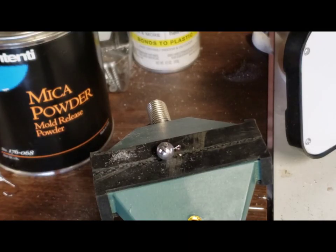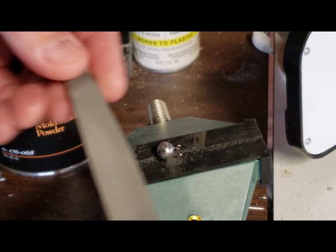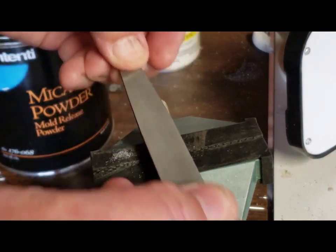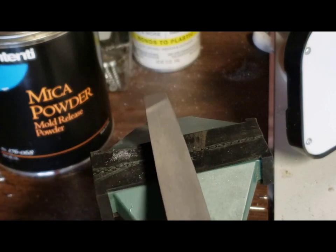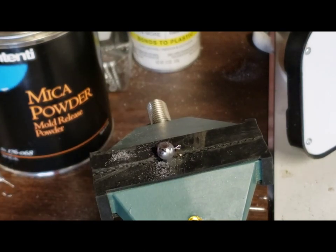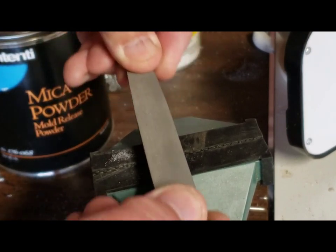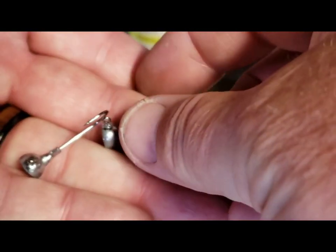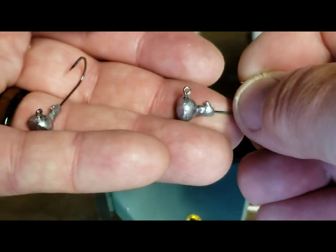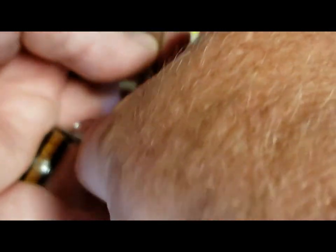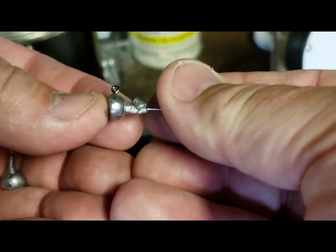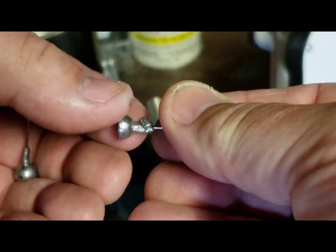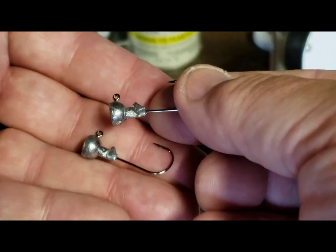To get this party started, we're gonna take an eighth ounce jig head here, put it in the vise, and start filing. So I filed down two of these now and they stand up pretty straight. It was hard to get a nice even file down there, whatever you want to call that flat. But should work. Next, we're gonna make a mold.